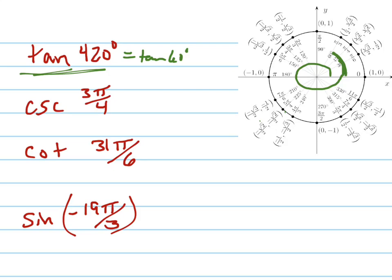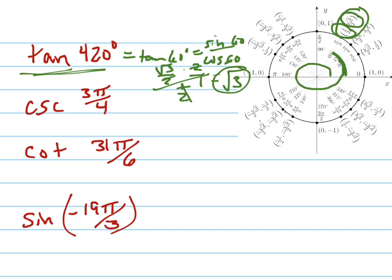And the tangent of 60 is just the sine of 60 over the cosine of 60. And the sine of 60 is root 3 over 2. And the cosine of 60 is 1 half. So I multiply by the reciprocal. They cancel. The 2's cancel and I get the square root of 3. So the answer is square root of 3.